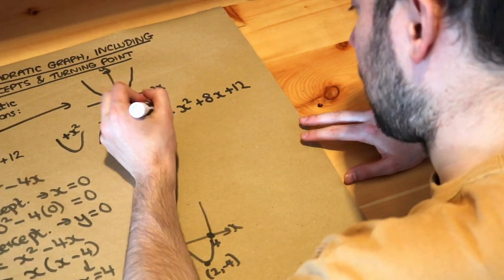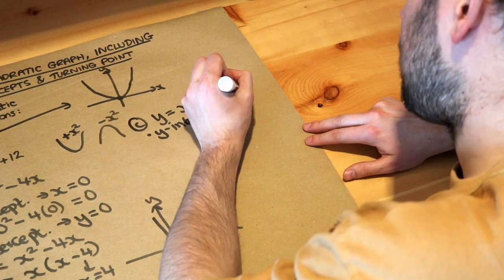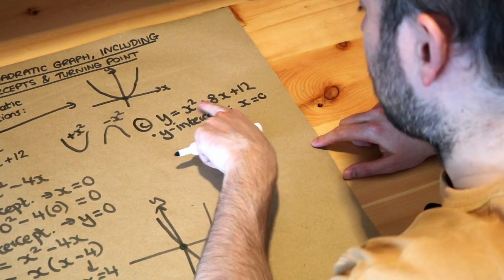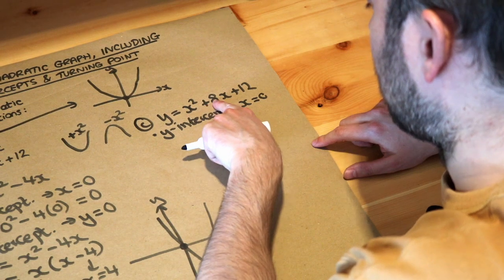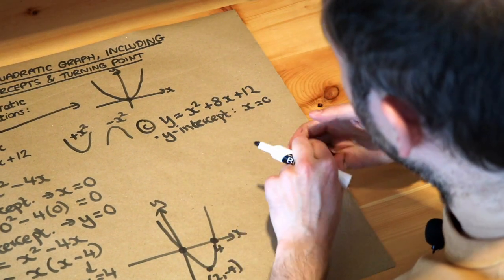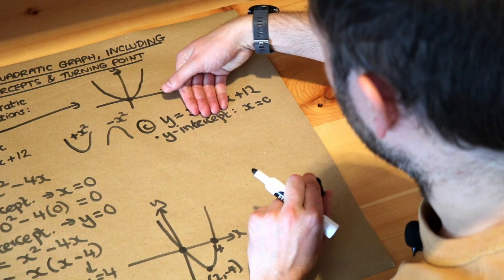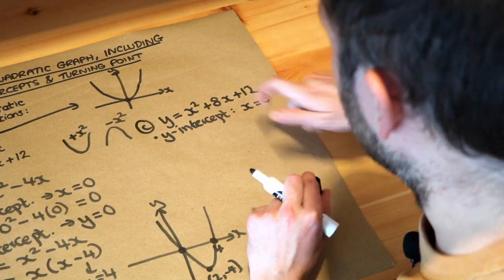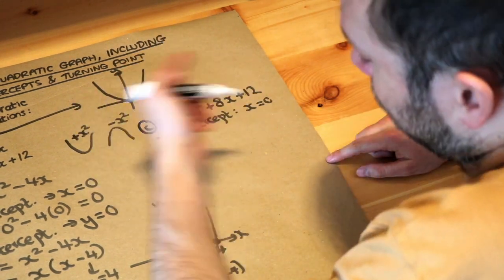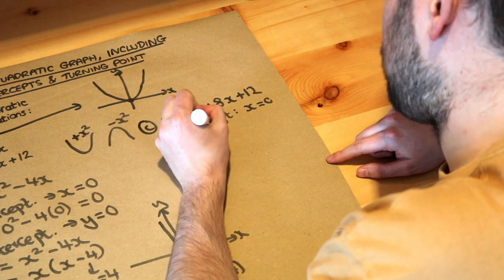Let's find the y-intercept first. We make x equal to zero, giving zero squared plus 8 times zero plus 12. We can ignore all the x-terms and just use the constant term to get the y-intercept directly, so the y-intercept is 12.